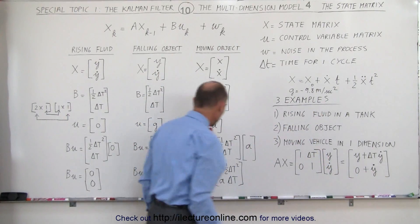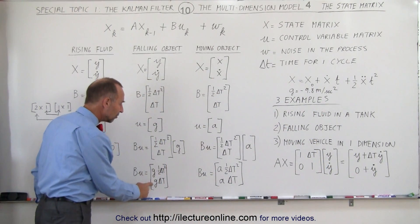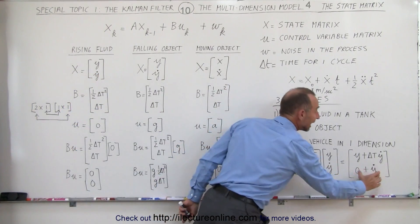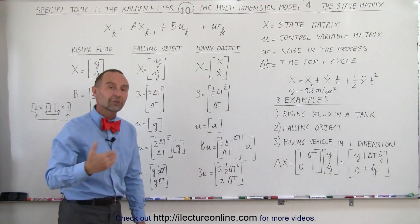The velocity was y dot. We now add to that the acceleration times the time elapsed. So now we can see that if we add this to this, we get the new velocity of the new state.